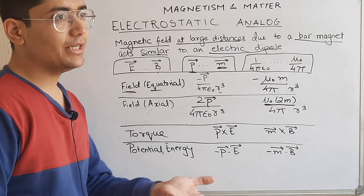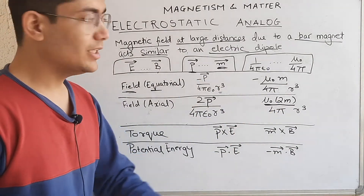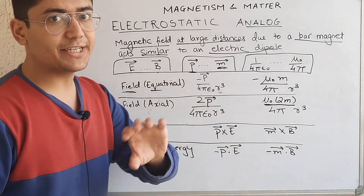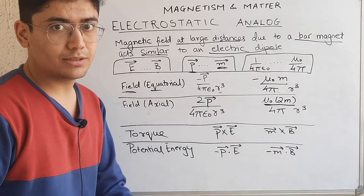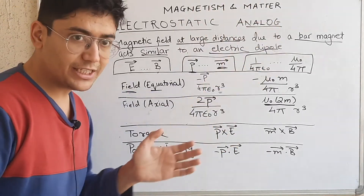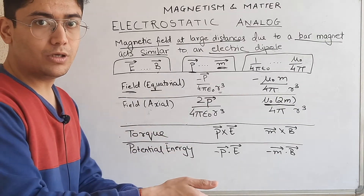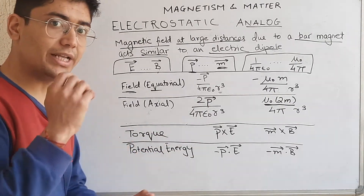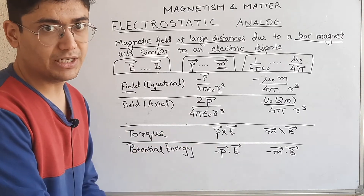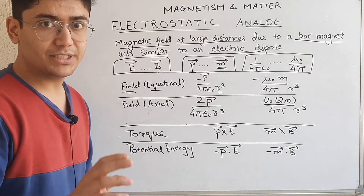Electrostatic Analog is not a new concept. We have already derived formulas because of the electric dipole — the electric field due to an electric dipole in the equatorial plane, the electric field in the axial plane, the torque on an electric dipole due to an external field, and the potential energy of a dipole in an external field. These all formulas we have discussed in Chapter 1.